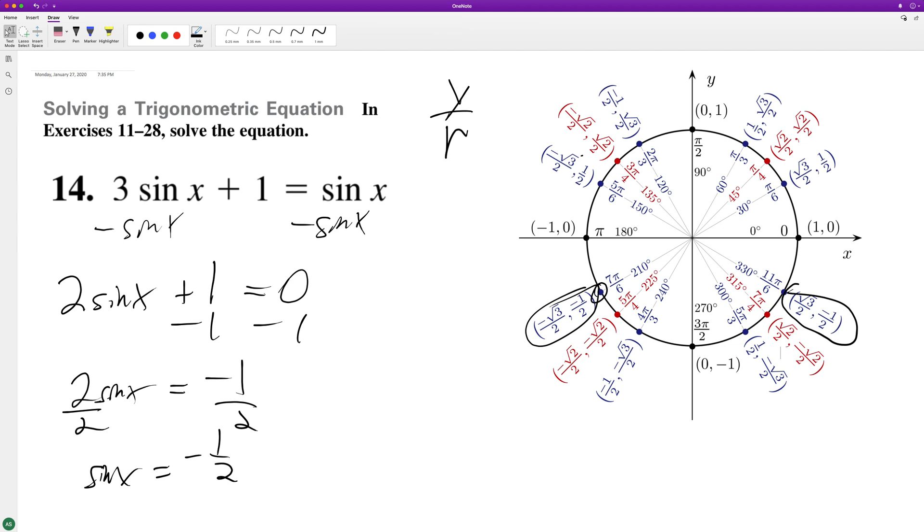So those are the two distinct cases, but we want to make this so it's valid for each coterminal angle. So, you know, if it's whatever that plus 2 pi.